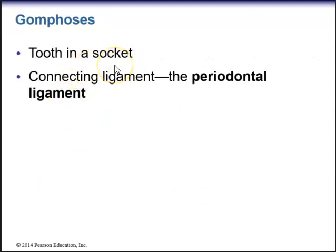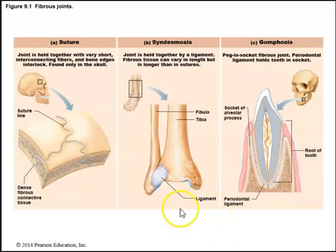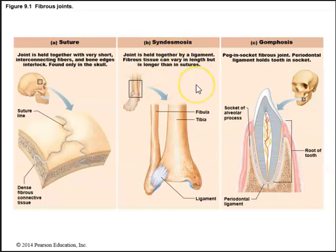Gomphoses are basically a tooth in a socket. There is a connecting ligament called the periodontal ligament that anchors the tooth into its socket. The three types of fibrous joints are: sutures found exclusively between the bones of the skull, syndesmoses held together by ligaments with longer fibrous tissue than sutures, and gomphoses — the peg and socket fibrous joints exemplified by the periodontal ligament.